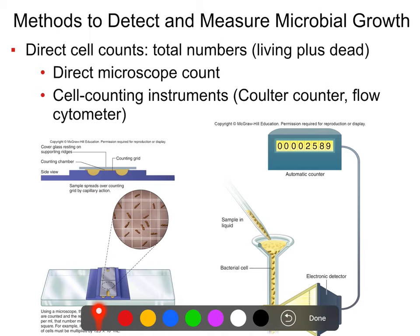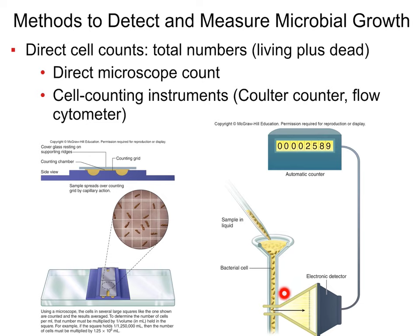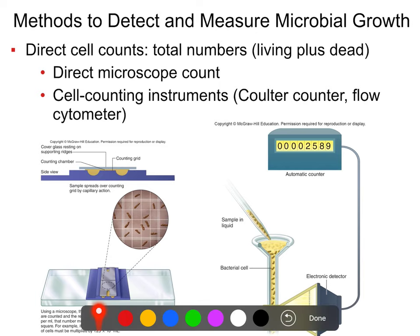For a Coulter counter, an electronic detector detects the conductance of cells as they pass through, because the conductance of a cell differs from the conductance of water, so it can count how many cells pass. With a flow cytometer, it measures fluorescence — you fluorescently label the cells, and when it sees a fluorescent tag pass, it counts one. Both are automated, so they take some time to run but you don't have to be present. They're fairly expensive, particularly flow cytometers, but they give a much more accurate cell count.